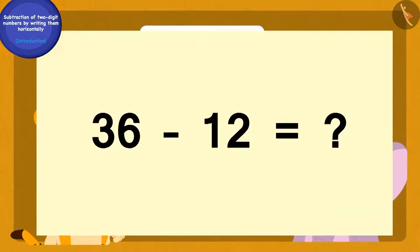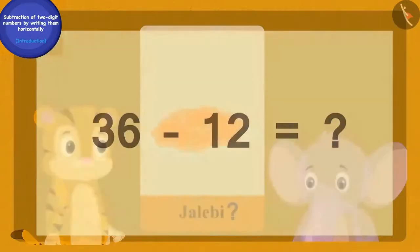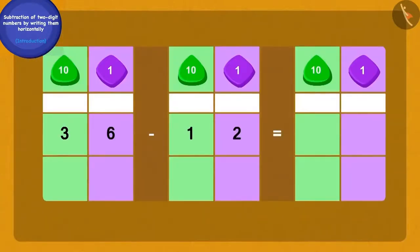Children, can you answer Bablu's question? Let us do this together. What we are going to do first? Yes, we will write 36 and 12 as 10 and 1 token like this. Now we will subtract the 2 ones of 12 from the 6 ones of 36.